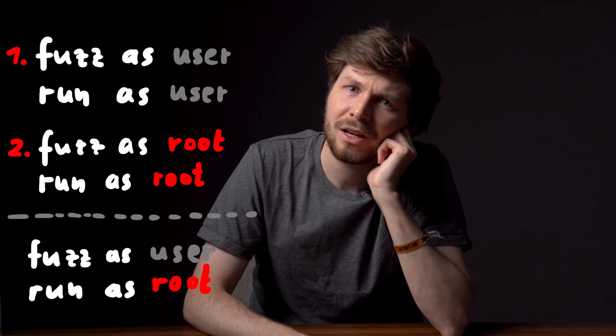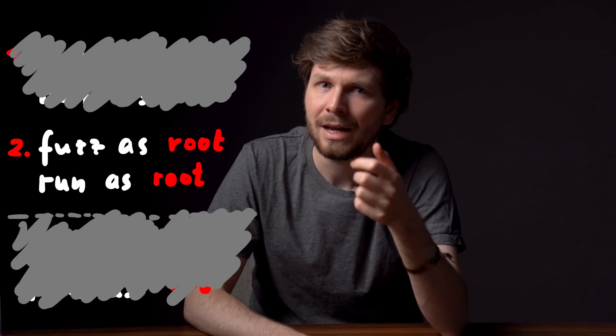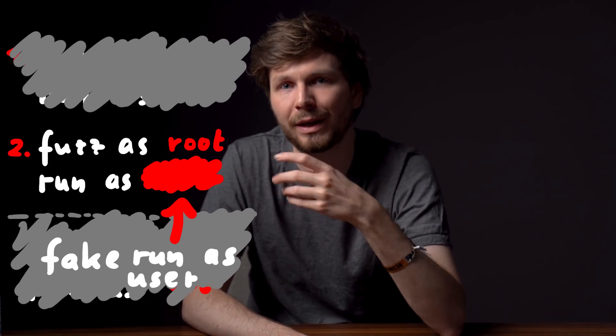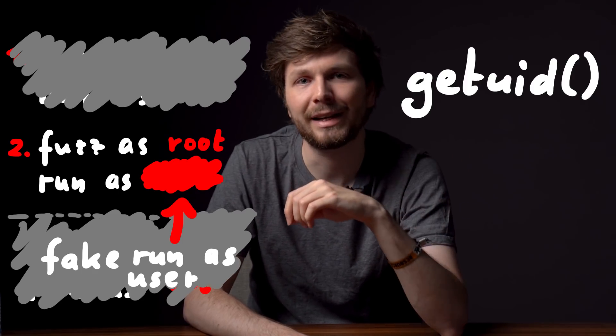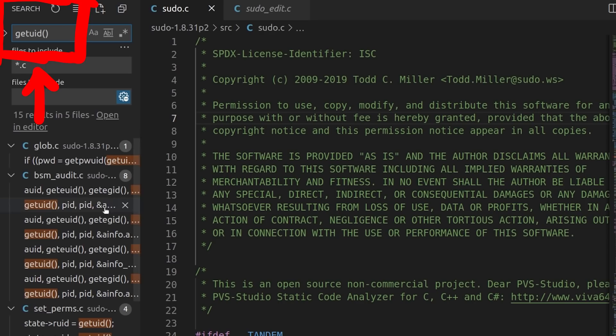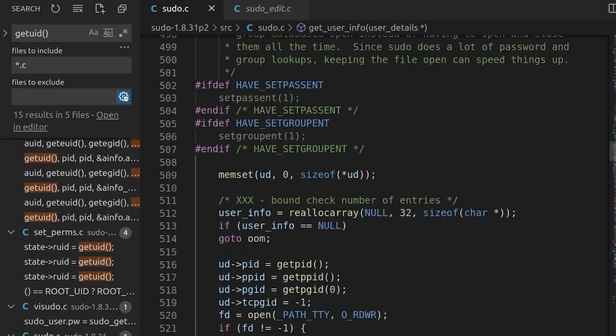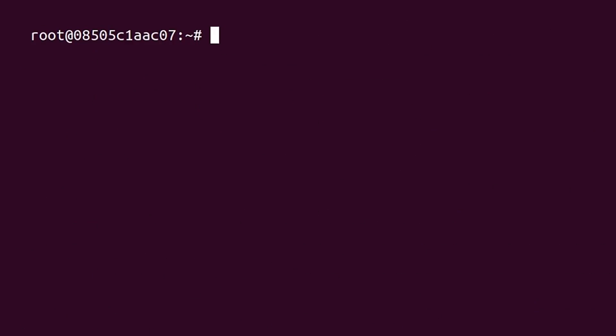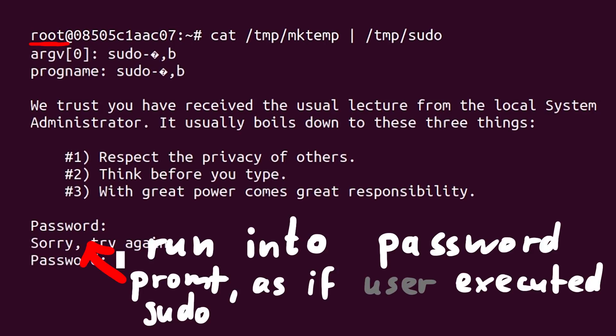I thought about that for a bit and figured we should keep running as root, but somewhere sudo should get the current user. If we find that location we can modify it and force it to think an unprivileged user invoked it. The typical libc function to get the user ID of the user that executed the program is getuid. Searching for all usages, we find the getUserInfo function in sudo.c. Instead of letting getuid return 0 for the root user, we just hardcode it to 1000 - the user ID of a regular user. When we compile those changes and use our mktemp test payload again, instead of running into the temp file creation, we now get the password prompt as if we were an unprivileged user. This looks like it should work, and should also resolve our file creation inode issues. We now should have a pretty good sudo fuzzing setup and can try again.